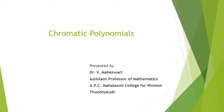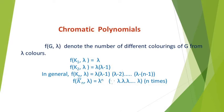Today we are going to see about the concept of chromatic polynomials in graph theory. First, f denotes the number of different colorings of G using lambda colors.